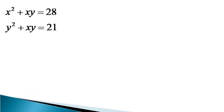To solve these equations, the very first thing we do is to give them numbers. We make the first equation x² + xy = 28 as equation 1, and the second equation y² + xy = 21 becomes equation 2.